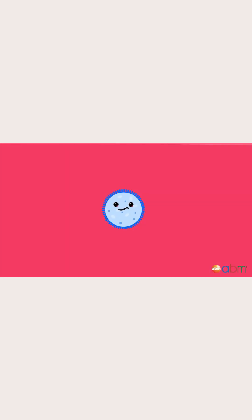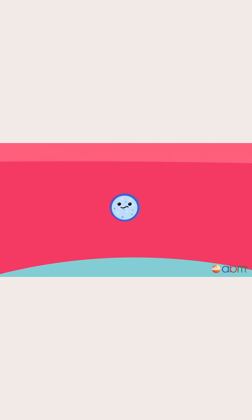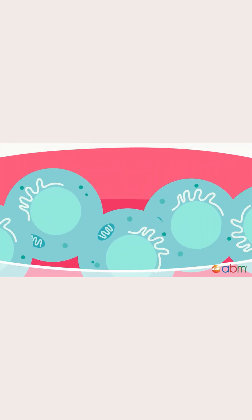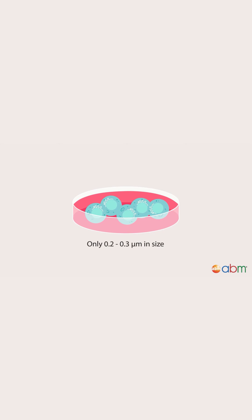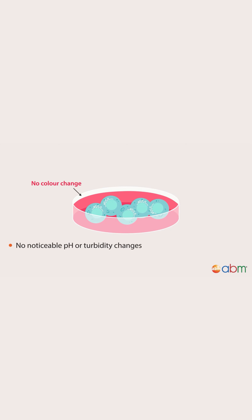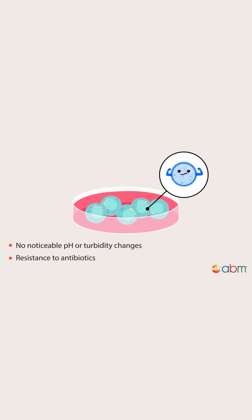One of the most common unnoticeable types of contamination is mycoplasma. Mycoplasmas are a type of bacteria that are only 0.2 to 0.3 micrometers in size, which makes them hard to see. They do not cause noticeable pH or turbidity changes, and they lack a peptidoglycan cell wall, which makes antibiotics ineffective to use against them.